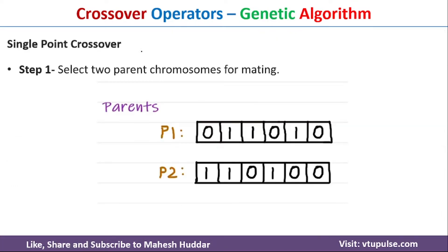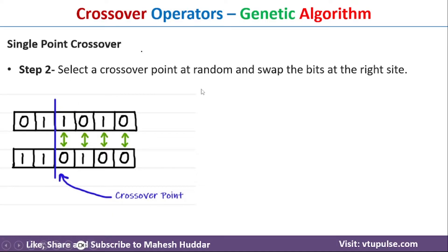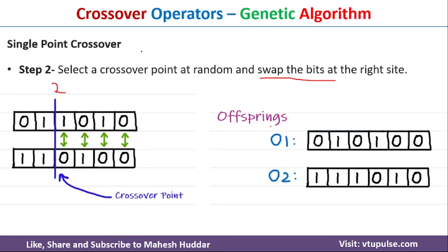The first crossover operator is single point crossover. We need to select two parent chromosomes for mating, done with the help of a fitness function applied to the initial population. Based on the fitness score, we select two parents — P1 and P2 — for mating. Next, we select one crossover point at random; I have selected crossover point at position two. Once selected, we swap the bits to the right of this crossover point.